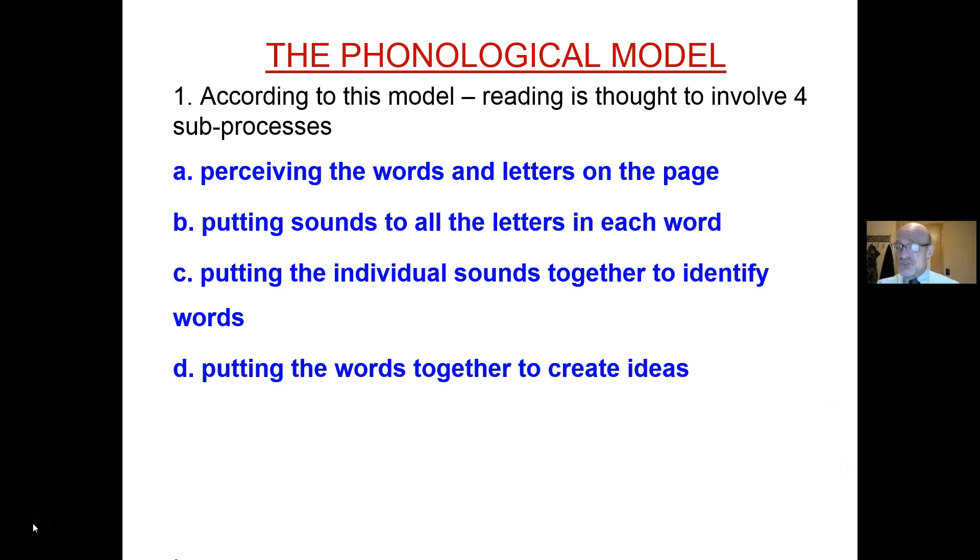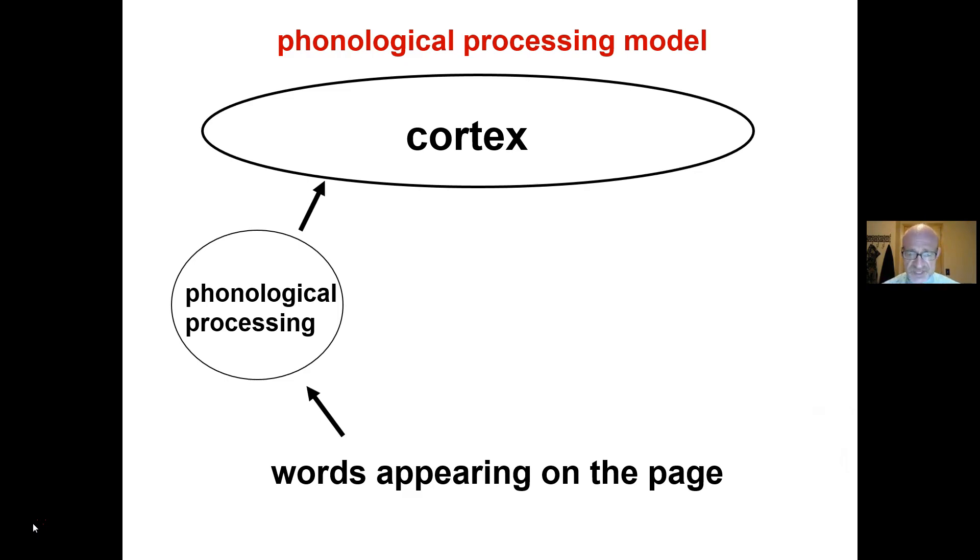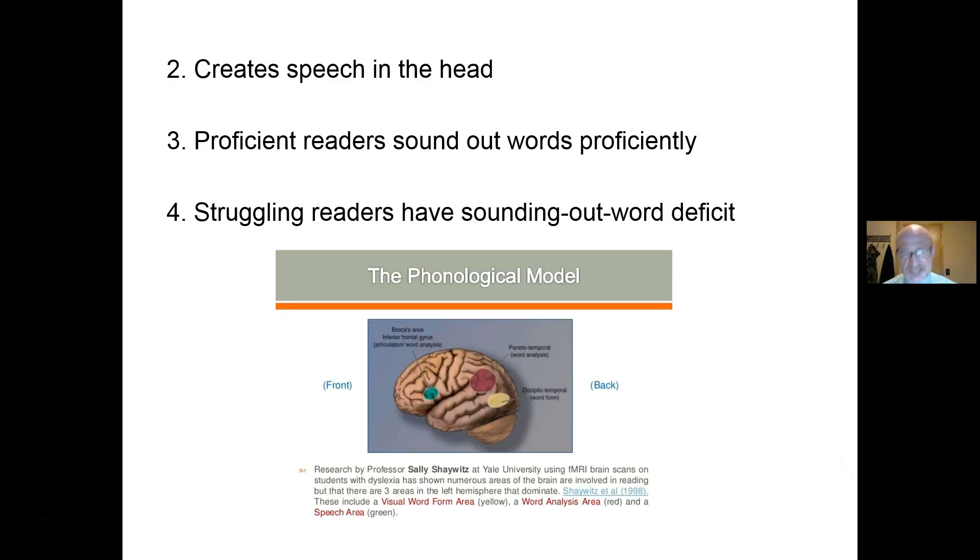This creates a form of speech in the head that occurs as you are reading. Words, phonological processing, speech in the head that you listen to as you read, and these ideas then go up to the cortex. It's a one-way flow of information. Well, that seems to make sense, doesn't it? This speech in the head that you listen to?